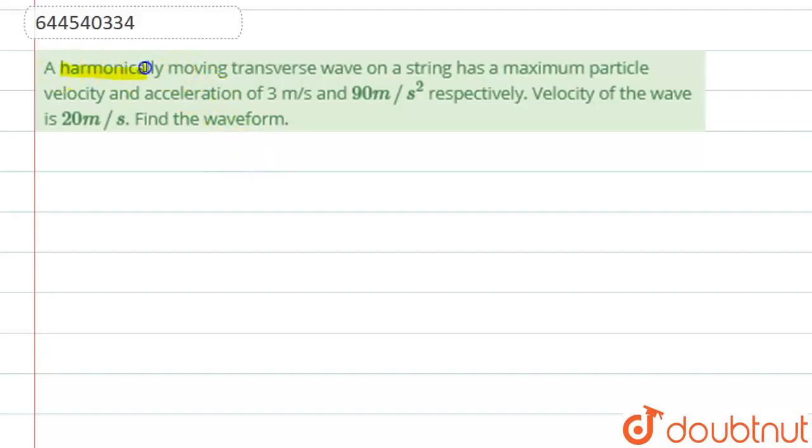Hello students, now we're going to see this question. The question says that a harmonically moving transverse wave on a string has maximum particle velocity and acceleration of 3 m/s and 90 m/s² respectively. The velocity of the wave is 20 m/s. Find the waveform.